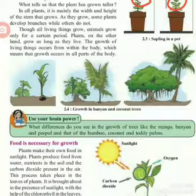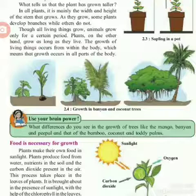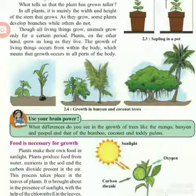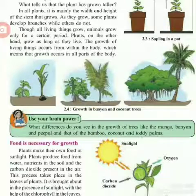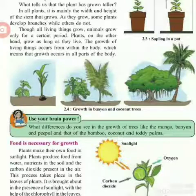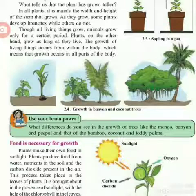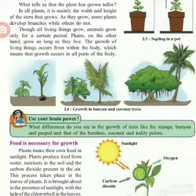In plants, it is mainly the width and height of the stem that grows. When you look at a plant, their height and width is increasing, and as they grow, some plants develop branches while others do not — it depends upon the type of plant.